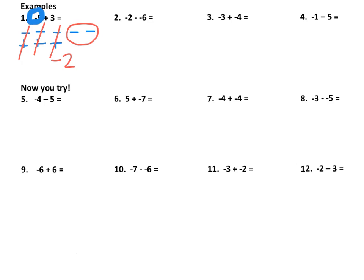Let's take a look at another example. In this problem, we have 2 negatives together, so the first thing we have to do is make that a positive. Now when we look at this, we have a negative 2, so I'm going to draw 2 negatives. Plus, we have a positive 6 — 1, 2, 3, 4, 5, 6. From here, we have a couple that we can cancel, and you can see that we are left with 4 positives.